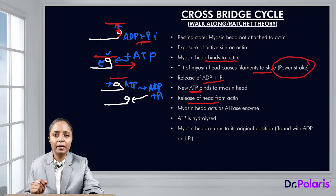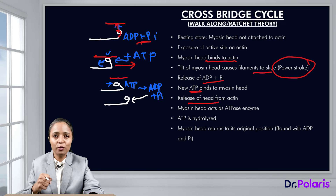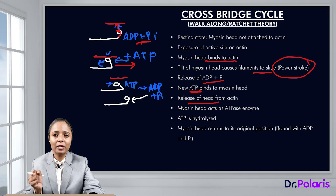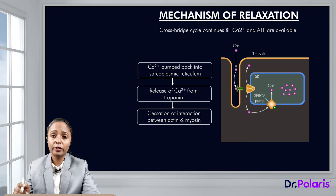The myosin head binds to the active site, pulls it — that is the power stroke — then releases, then returns to its position, and this keeps repeating. This is known as cross-bridge cycling, and that is the basis for muscle contraction.